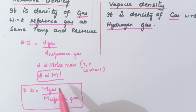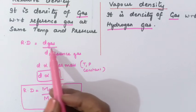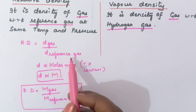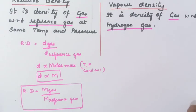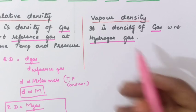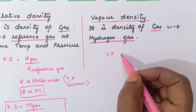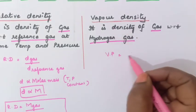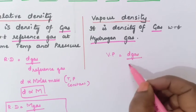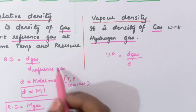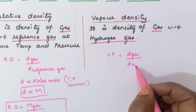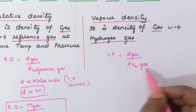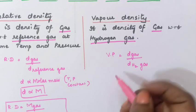In a question, they will typically ask you to calculate the density of a particular gas, and the reference gas will be given. So you need to find the density of that particular gas. For vapor density, VD equals density of gas divided by density of the reference gas, where the reference gas is specifically hydrogen gas, H2.